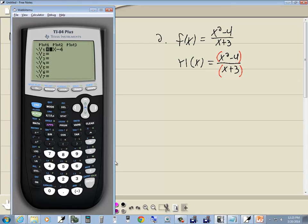So I'm going to press my y equals, clear, do a beginning parentheses, x squared, minus 4, closing parentheses, divided by beginning parentheses, x plus 3, closing parentheses. And now that's in y1.